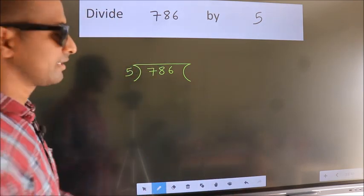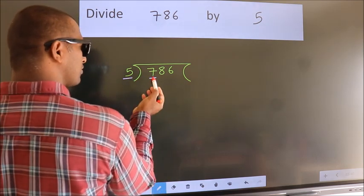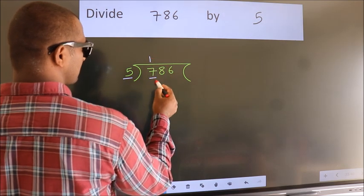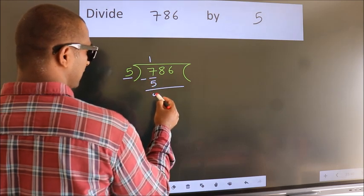Next, here we have 7. Here 5. A number close to 7 in the 5 table is 5 times 1 equals 5. Now we should subtract. We get 2.